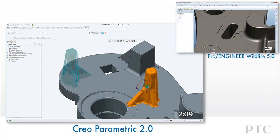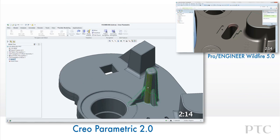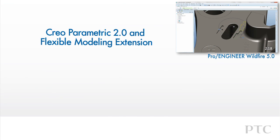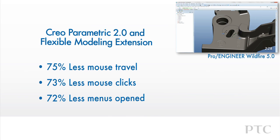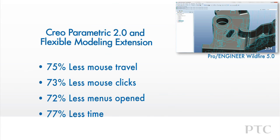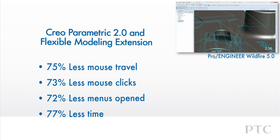We've shown some of the key highlights in working with imported geometry with Creo Parametric's flexible modeling extensions. The impact on design productivity is impressive. In this short comparison, we have 75% less mouse travel, 73% less mouse clicks, and 72% less open menus. The result is improved design productivity — saving some 77% of the time taken to achieve the same result with Creo Parametric compared to ProEngineer Wildfire.